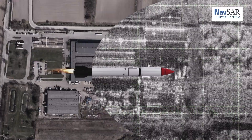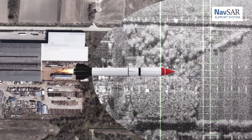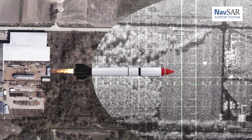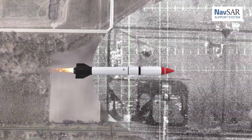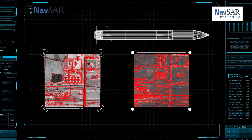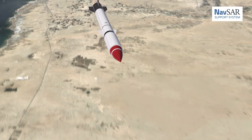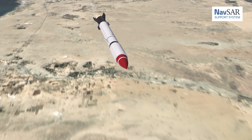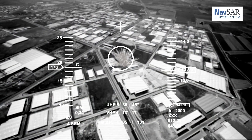The NAVSAR principle estimates corrections at given waypoints on the basis of comparing synthetic aperture radar images with characteristic points of the terrain for a given waypoint stored in a database. These corrections can further be used by the main INS or satellite navigation systems to increase the accuracy of missile guidance.